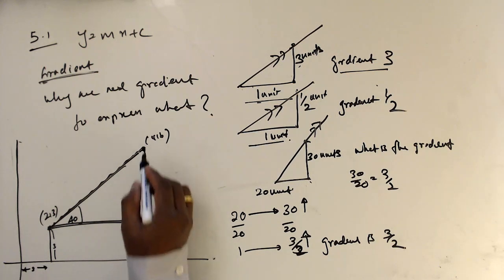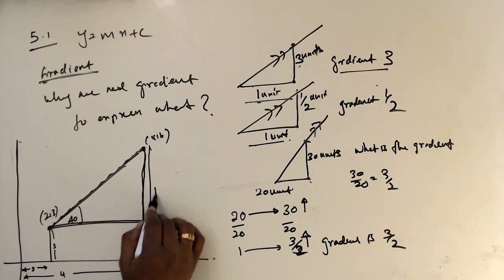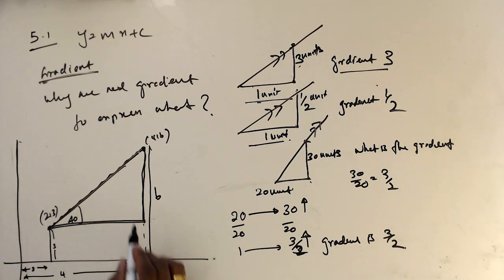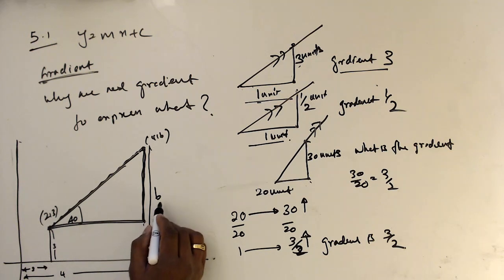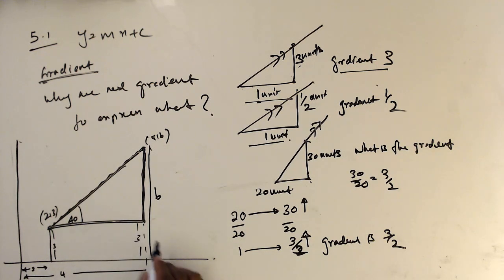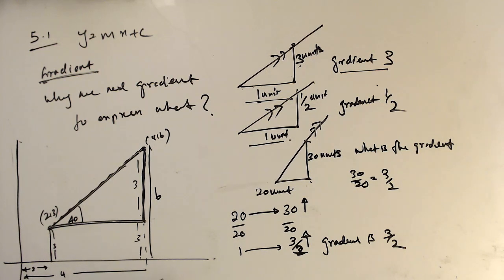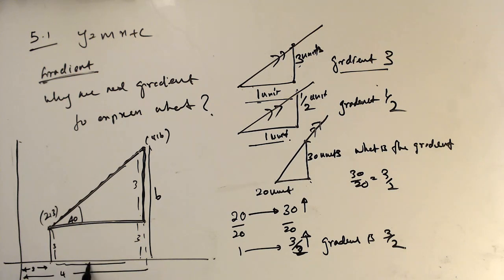What is the meaning of point (4, 6)? From the origin across it is 4 units, and from the origin upward it is 6 units. This forms a rectangle. Since the lower point is at height 3, the upper point is at height 6, so the vertical difference is 6 minus 3 = 3. The horizontal difference is 4 minus 2 = 2.